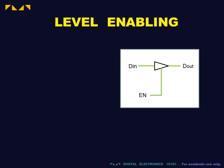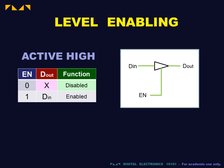EN is called a level-enabling control, because the function of the gate depends on the state, or level, of this control input. For the gate we used, the enabler is said to be active high, because the gate is enabled when the control input is 1 or high.